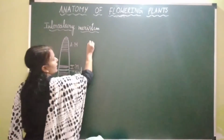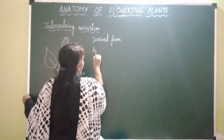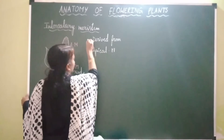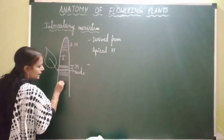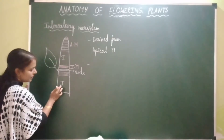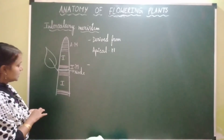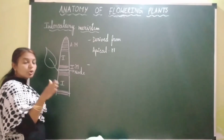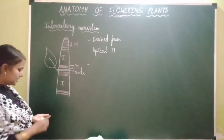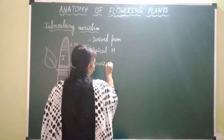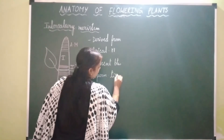Let's write all these points. Where is this intercalary meristem derived from? It is derived from the apical meristem. Where is it present? It is present between two permanent tissues. This is one internode and this is another internode — the space between two nodes. This intercalary meristem can be present above and below the node. As this meristem is intercalated between two permanent tissues, it is called intercalary meristem.